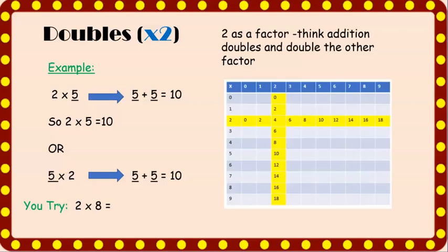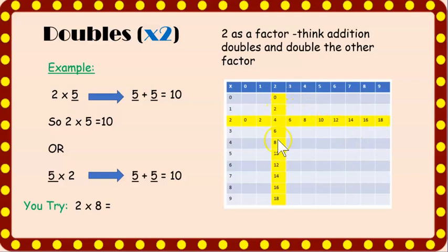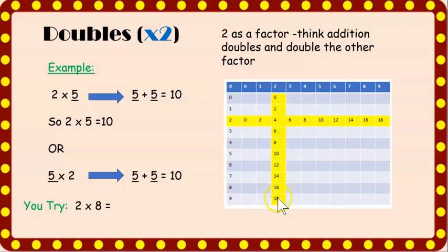Looking at the multiplication chart, do you notice a pattern? If you look closely, you may notice that each of the digits in the ones place is an even number and that the digits repeat: zero, two, four, six, eight — zero, two, four, six, eight. That's a pattern.